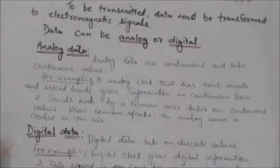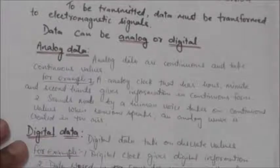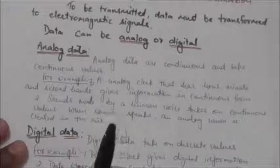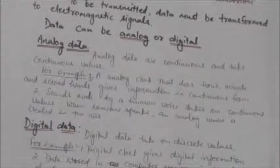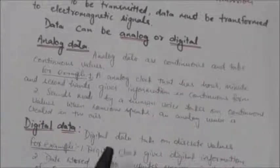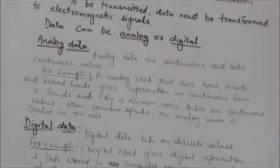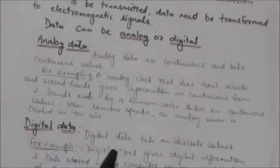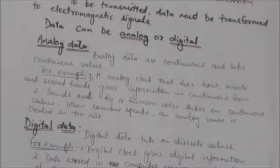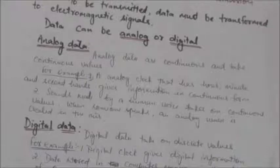First we will study about analog data. Analog data refers to information that is continuous — analog data takes continuous values. For example, an analog clock which has minute and second hands gives information in continuous form. As you can see, the movement of the hands in that clock is continuous, so it gives information in continuous form.